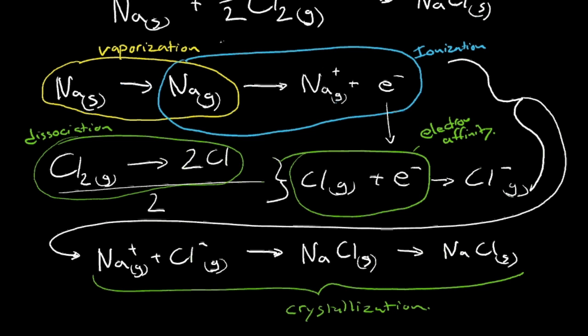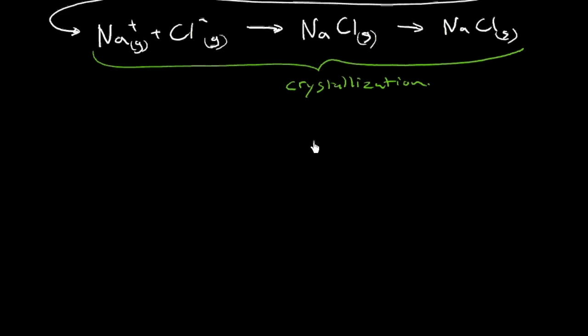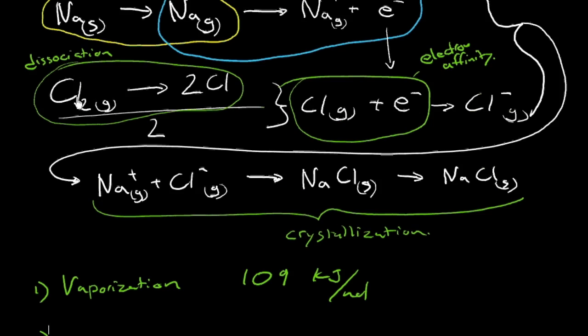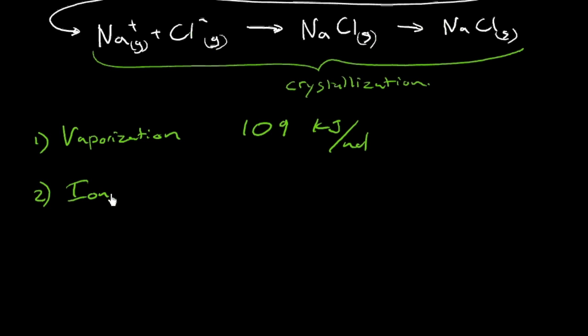So let's look at those things step by step. The first one we had was vaporization. So for vaporization of one mole of sodium, we're going to get 109 kilojoules per mole. What's our next step here that we had in our logical steps here? Ionization. The ionization energy is 497 kilojoules per mole. So I mean, so far this is not looking favorable, right? These are positive values and not something that's going to happen.